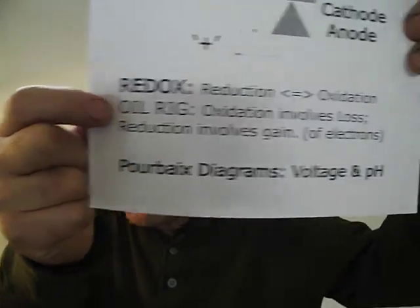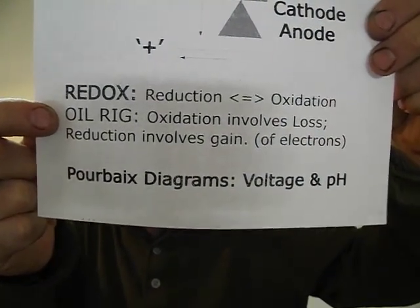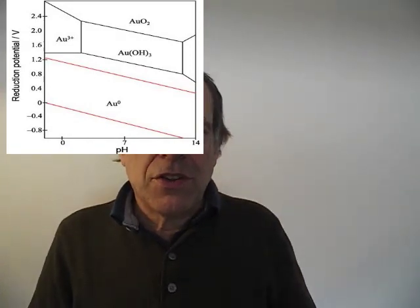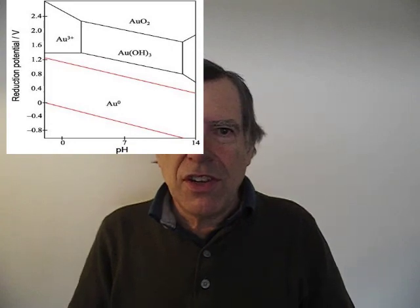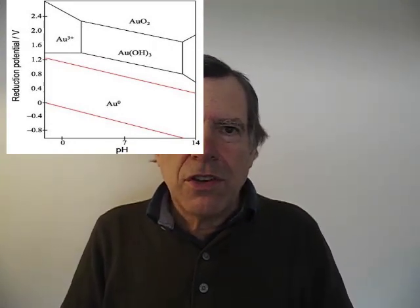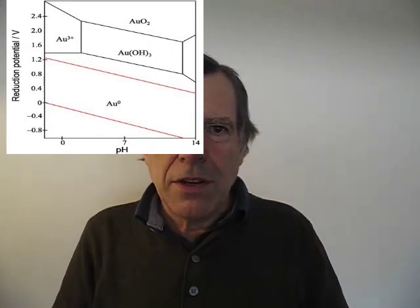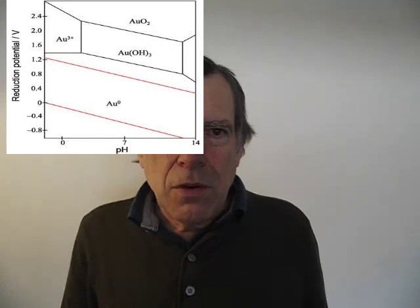The next term is a Pourbaix diagram. As you change the pH of a substance, the voltages at which things happen change, and what actually happens changes. In an acidic pH, you usually end up with ions dissolved in the water. As you get a more positive pH, you generally end up with solid oxides that don't dissolve. That was the main intent of alkaline batteries — to have electrode substances that didn't dissolve into the electrolyte.